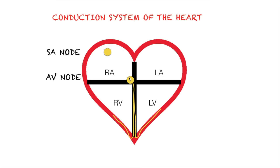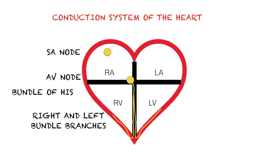From the AV node, it goes to a single structure called the bundle of His. From the bundle of His, the cells will continue and bifurcate into two separate branches — one to the left and one to the right — now called the left and right bundle branches. From the bundle branches, they extend within the apex of the heart and will be called the Purkinje fibers. So again: the conduction system begins at the SA node, goes to the AV node, next is the bundle of His, then the right and left bundle branches, and eventually the Purkinje fibers.